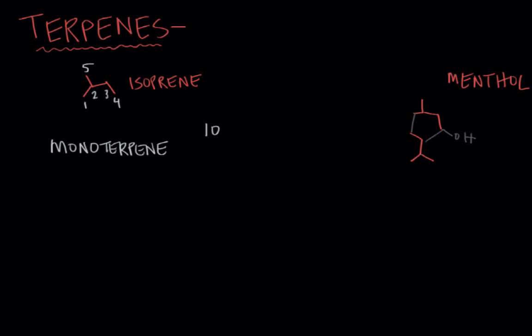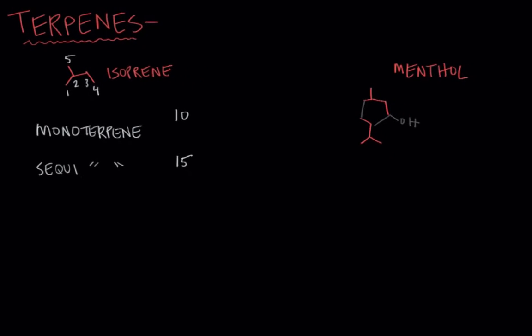If you add one more isoprene, you'd have 15 carbons. That would give you three units of isoprene, and we'd call it a sesquiterpene. One example of a sesquiterpene is ginger, and ginger looks like this.